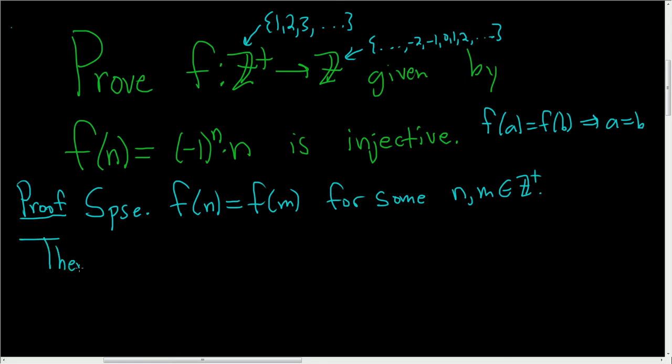Then, the only thing we can really do is write down what this means. f(n) = (-1)^n · n.